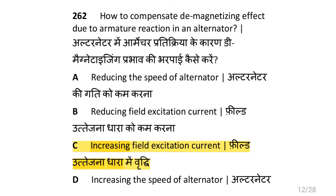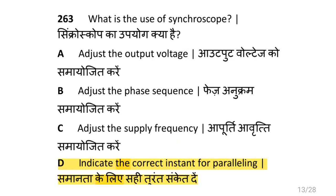How to compensate the demagnetizing effect due to armature reaction in an alternator, i.e. by increasing field excitation current? What is the purpose or use of a synchronoscope, i.e. to indicate the correct instant for paralleling?